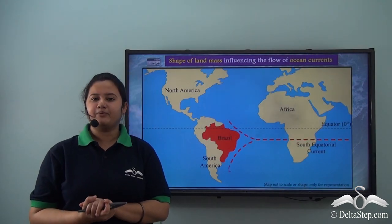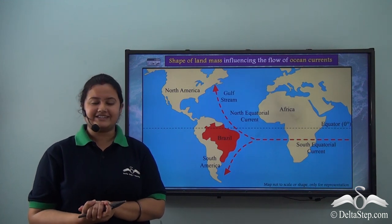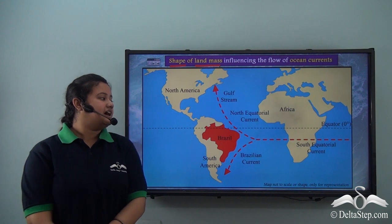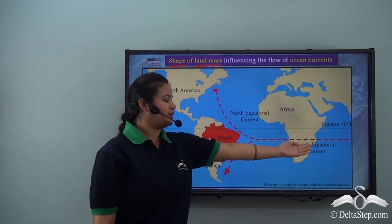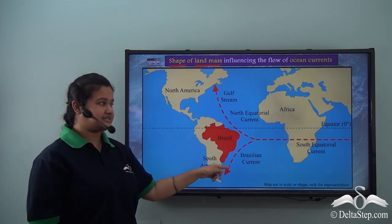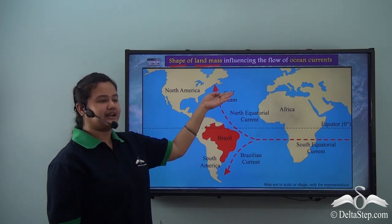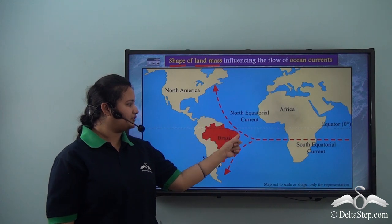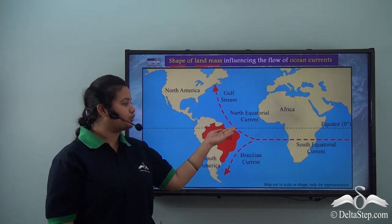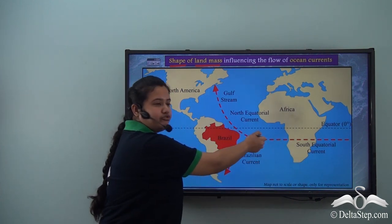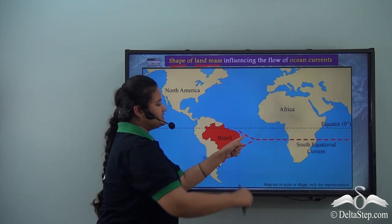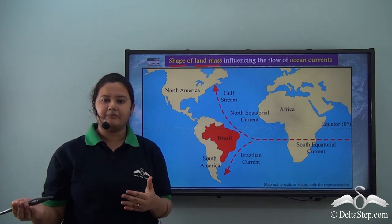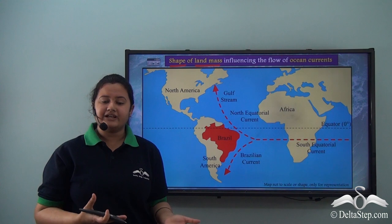Now we will learn about another important factor which affects the movement of ocean currents — that is the shape of the landmass. The South Equatorial current coming from the east hits the state of Brazil and bifurcates into two parts. It flows towards the north as the North Equatorial current and Gulf Stream, and towards the south as the Brazilian current. This is because the shape of the landmass is jutted out or protruded outwards, which obstructs the flow of the ocean current, causing it to bifurcate into two parts.